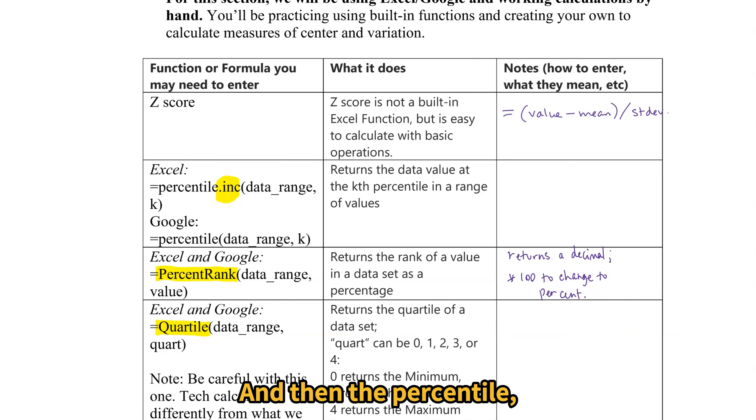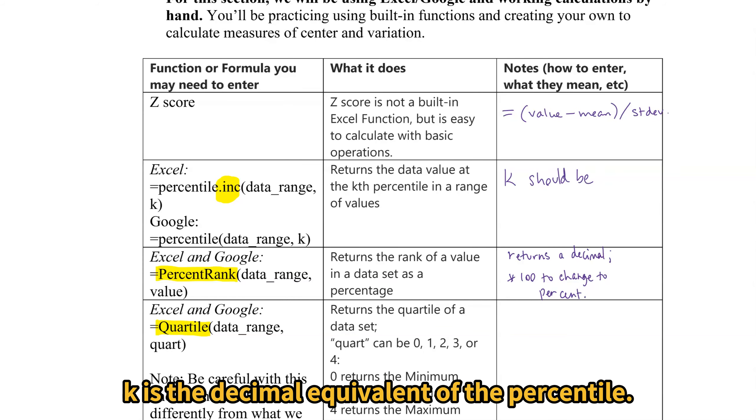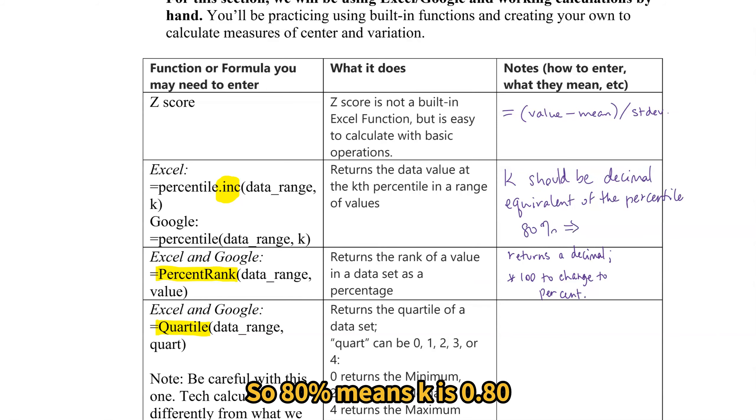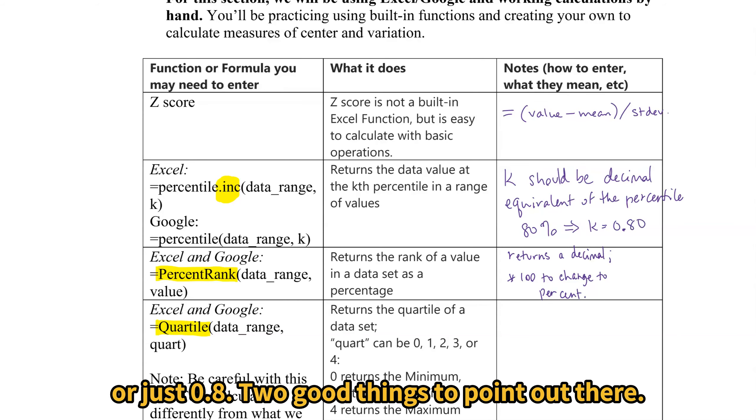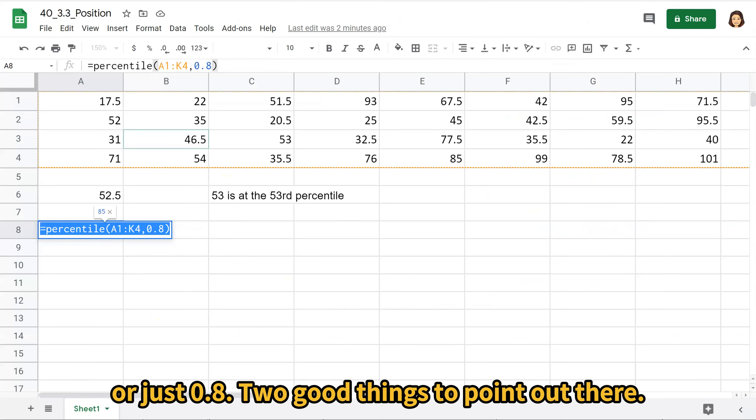And then the PERCENTILE K is the decimal equivalent of the percentile. So 80% means K is 0.80 or just 0.8. Two good things to point out there.